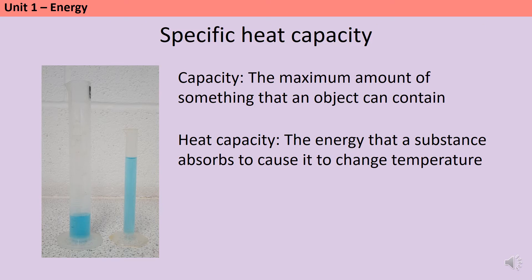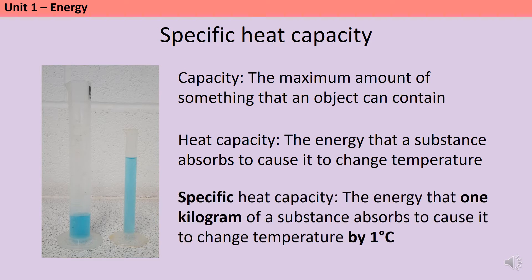Different materials will require different amounts of energy in order to heat them up. The word specific, when we use it in science, means we're not just talking about any old object of any old size being heated up by any old amount — it means we're going for quite distinct quantities. So when we talk about specific heat capacity, this means the energy that one kilogram of a substance needs to absorb in order to heat it up by one degree C.